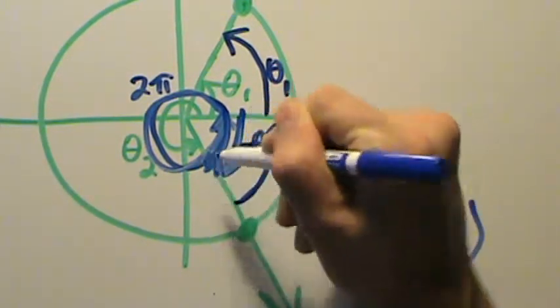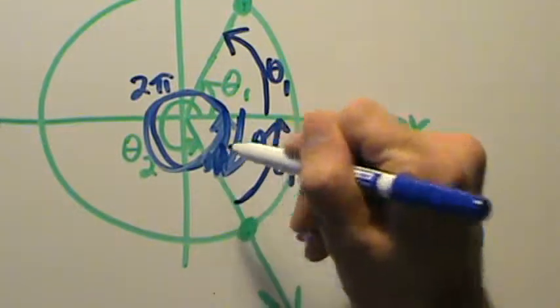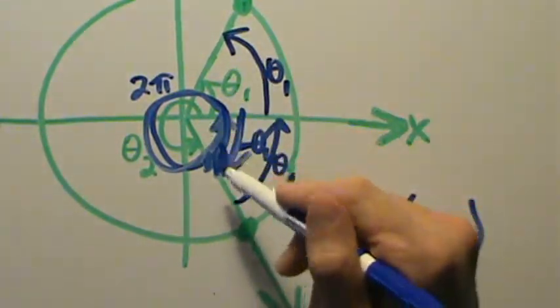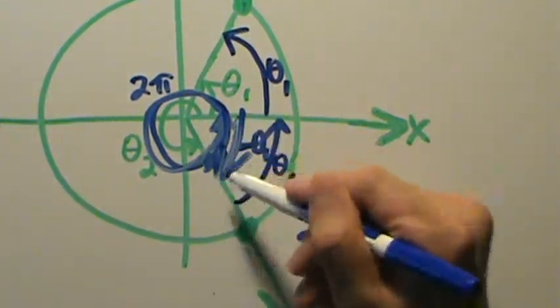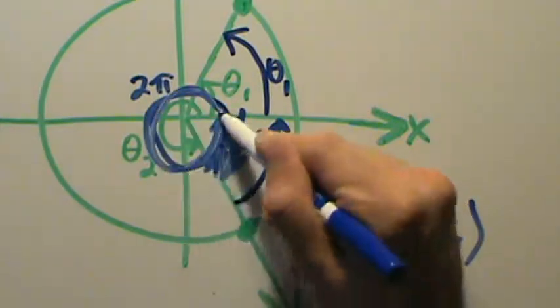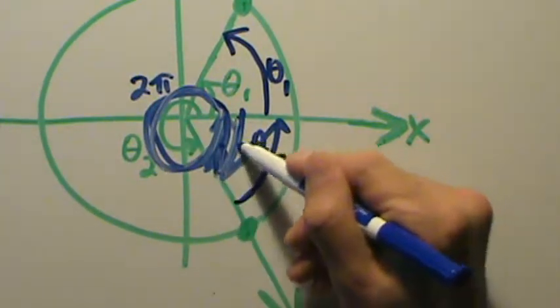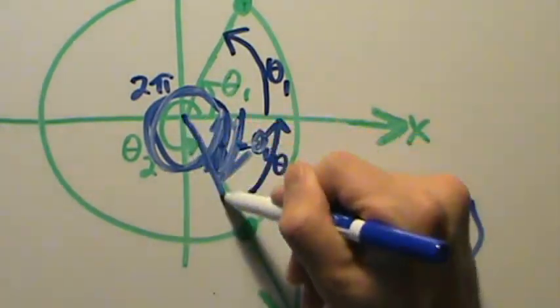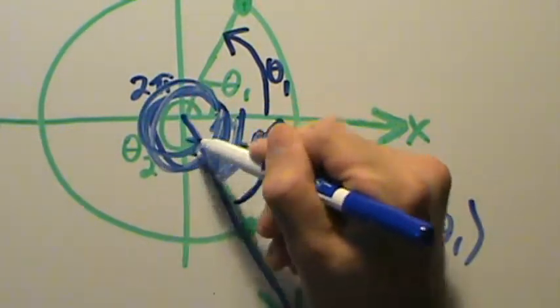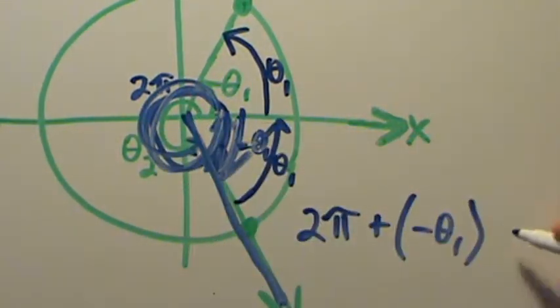Okay, just go back this way theta 1 units but in the negative direction, in the clockwise direction. That's negative for negative angles. So 2 pi and then plus negative theta 1, that's going to put us right here. That's going to be the same thing as this angle right here, which is exactly what we want. That's our theta 2.